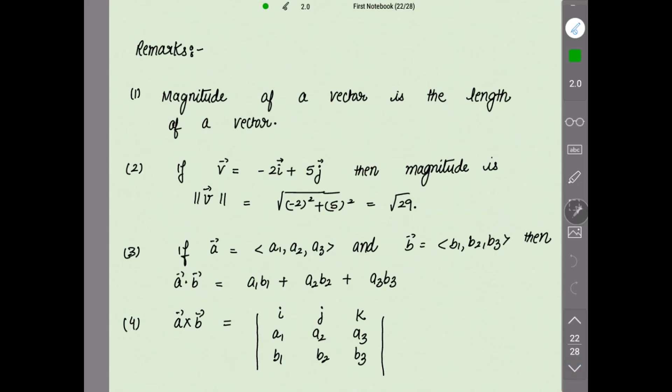Some remarks are given. First: the magnitude of a vector is the length of a vector. Second: if vector v is given as minus 2i plus 5j, where i and j are the unit vectors, then its magnitude — norm of v — equals the square root of (-2)² plus (5)², which is the square root of 4 plus 25, equal to the square root of 29.